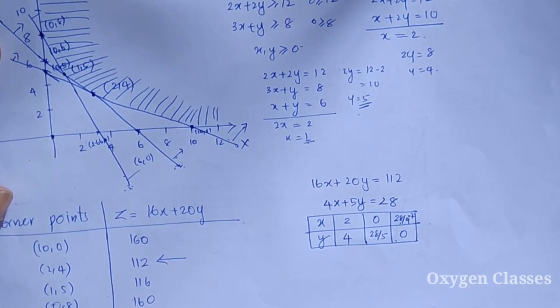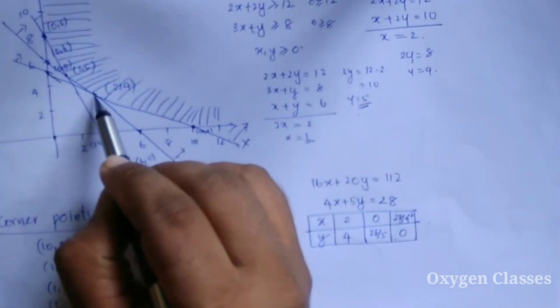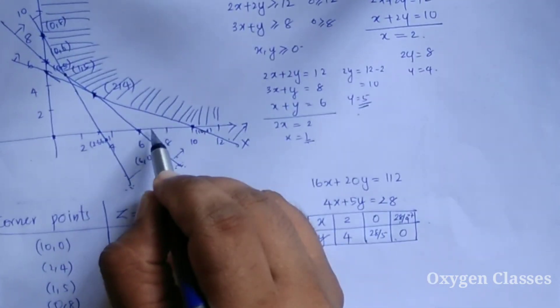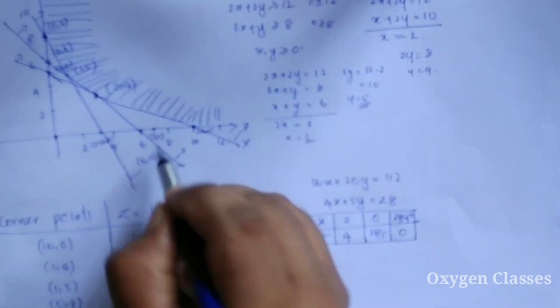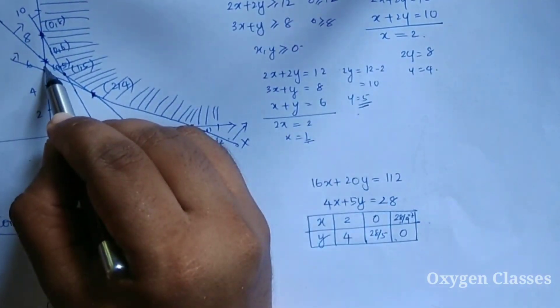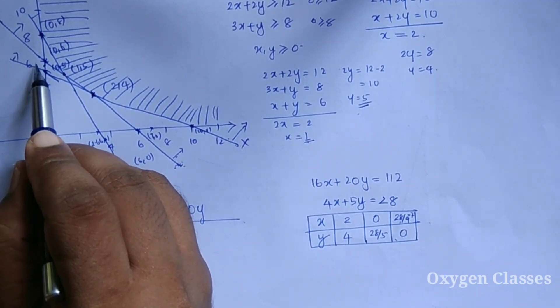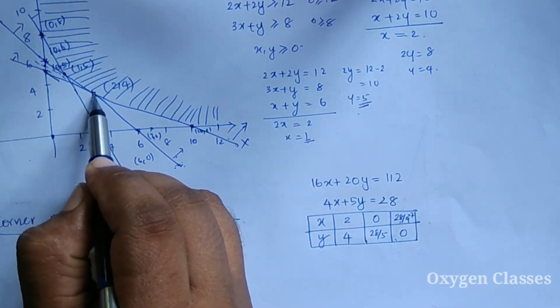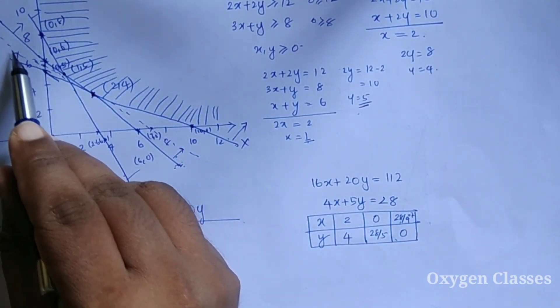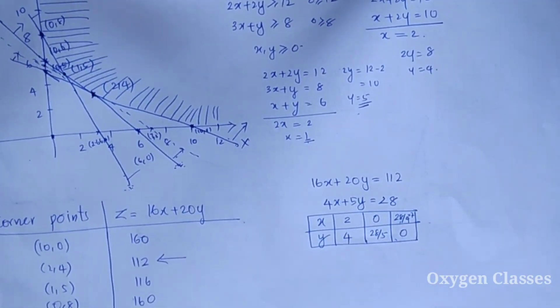The point (2, 4) is one corner point. We mark (7, 0) and (0, 28/5), which is about 5.6. We draw the dotted line through these points, passing through the corner point (2, 4).